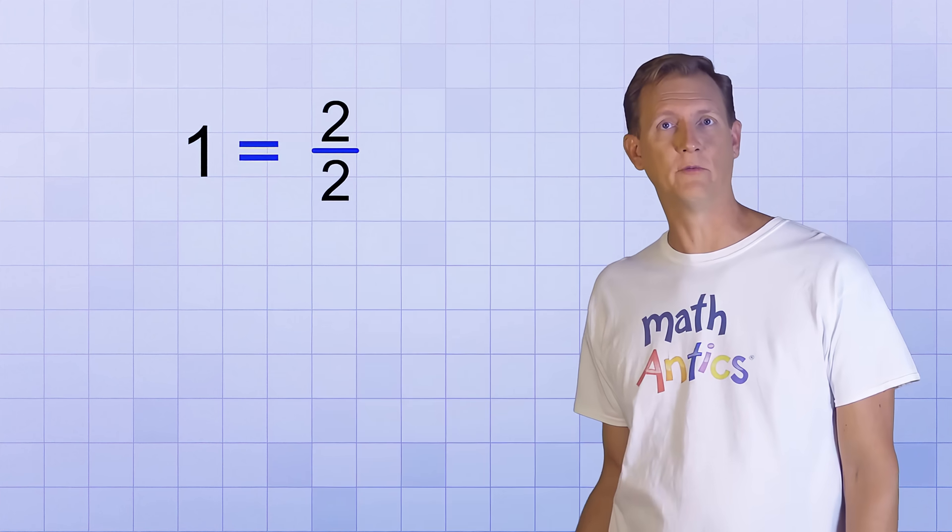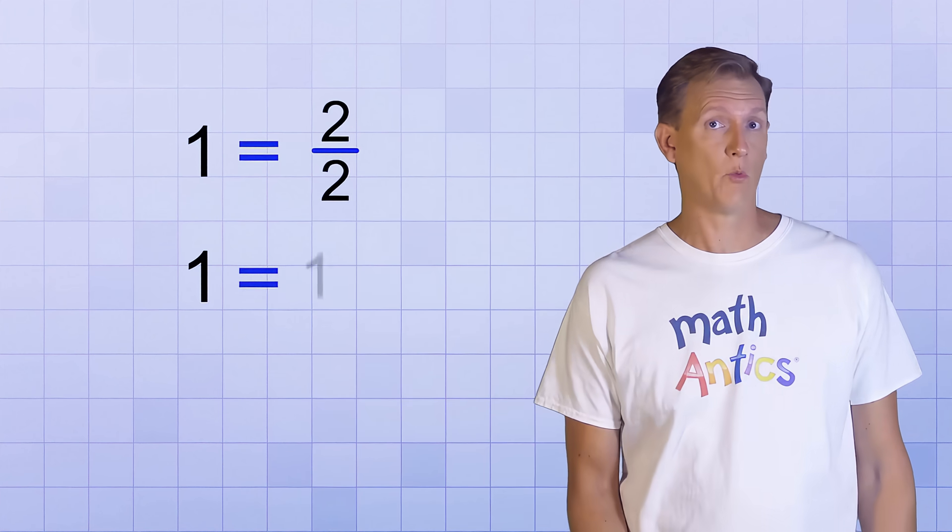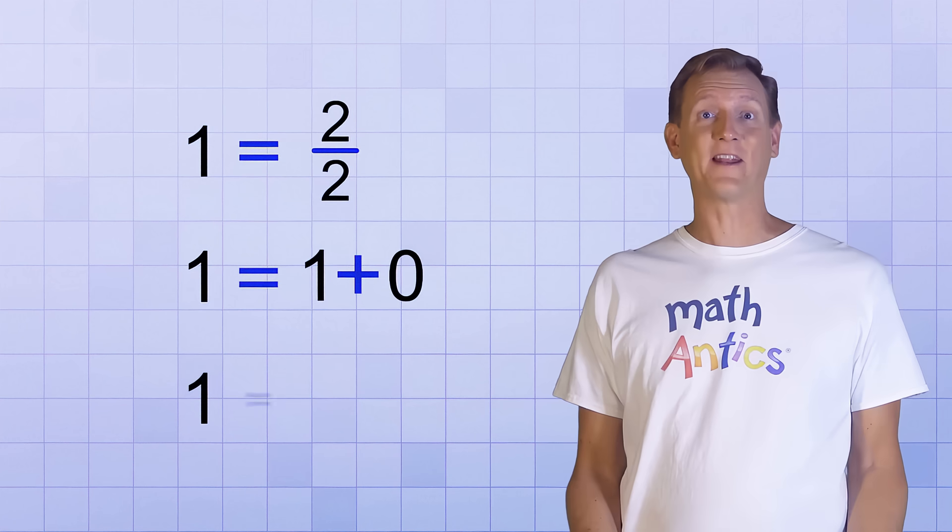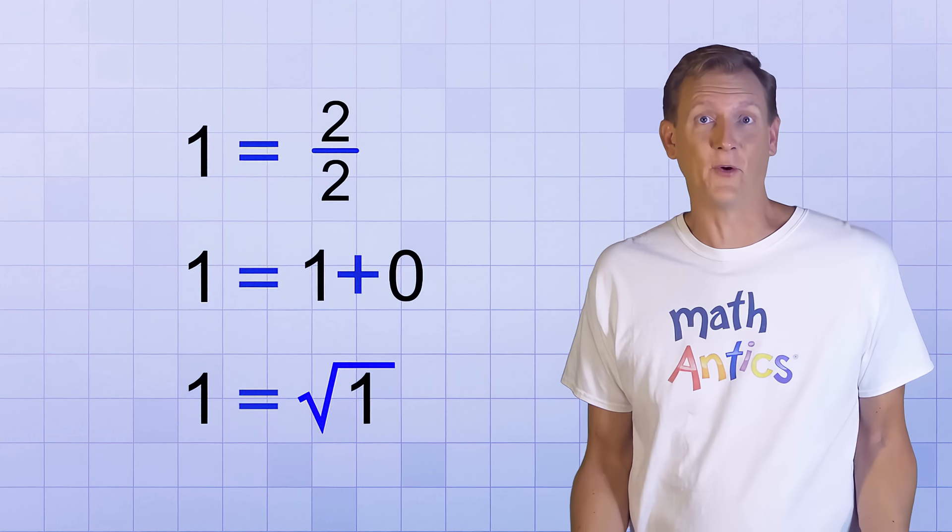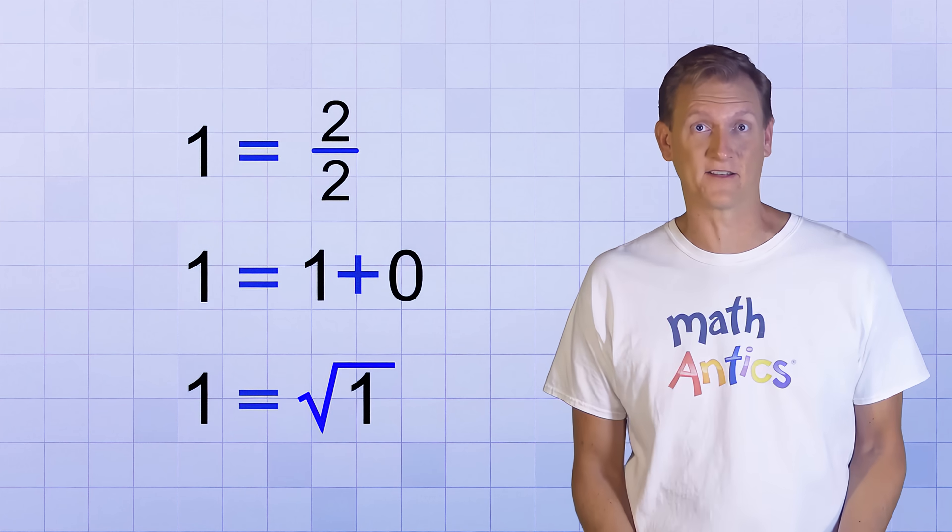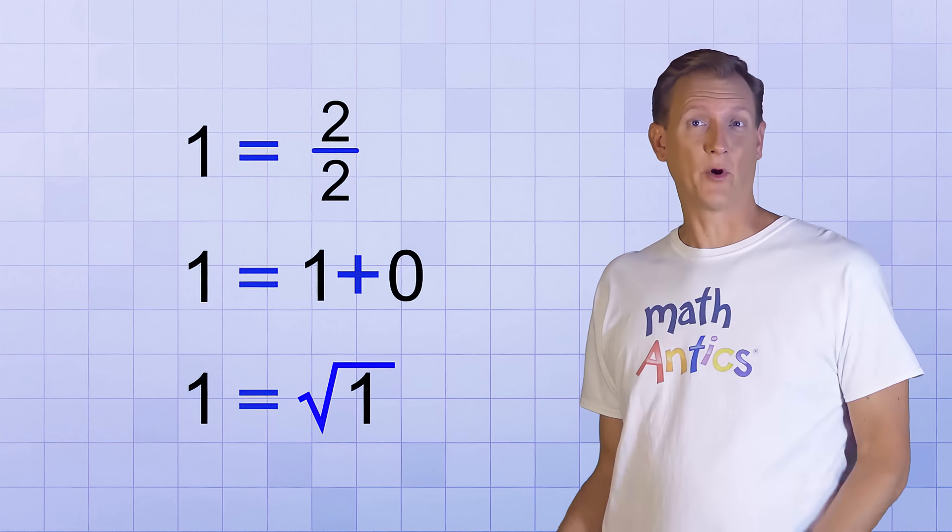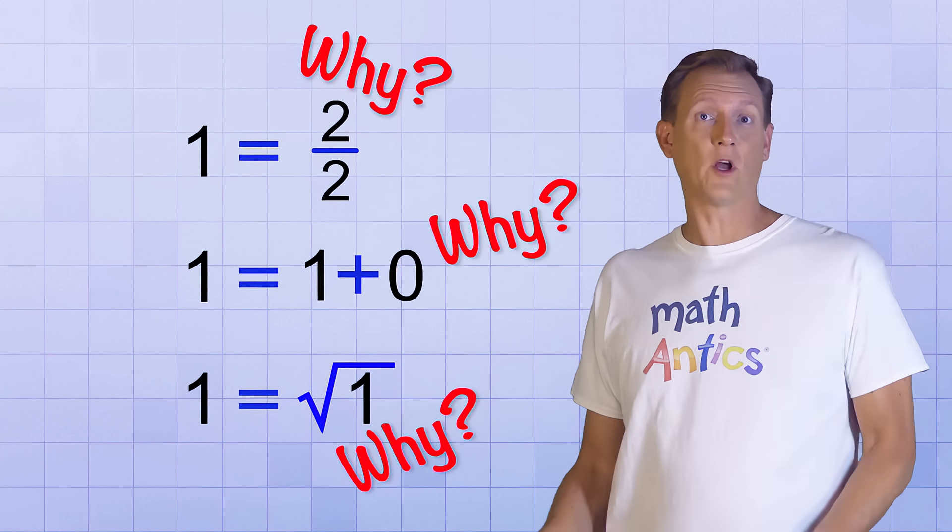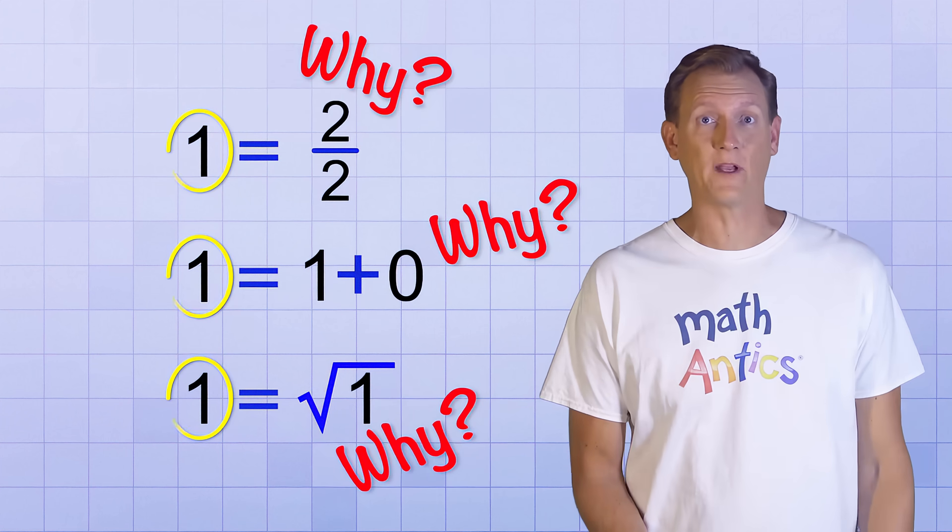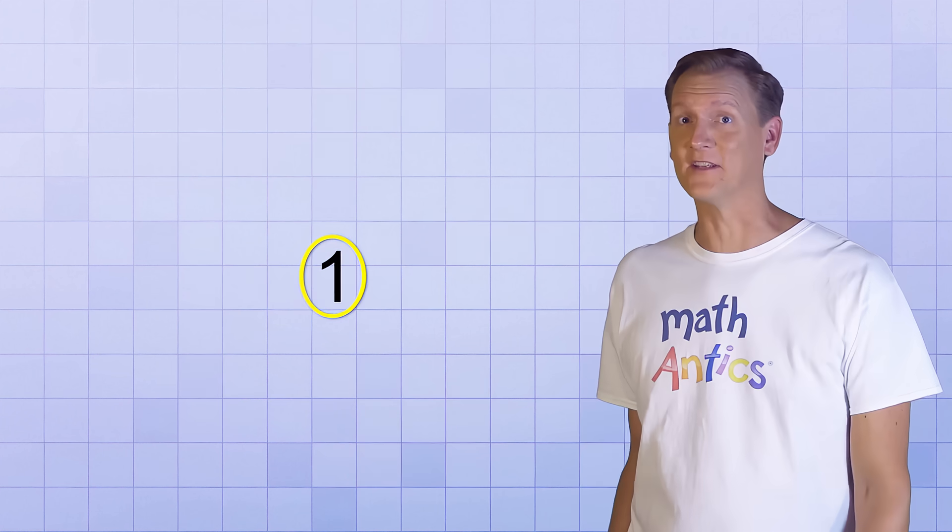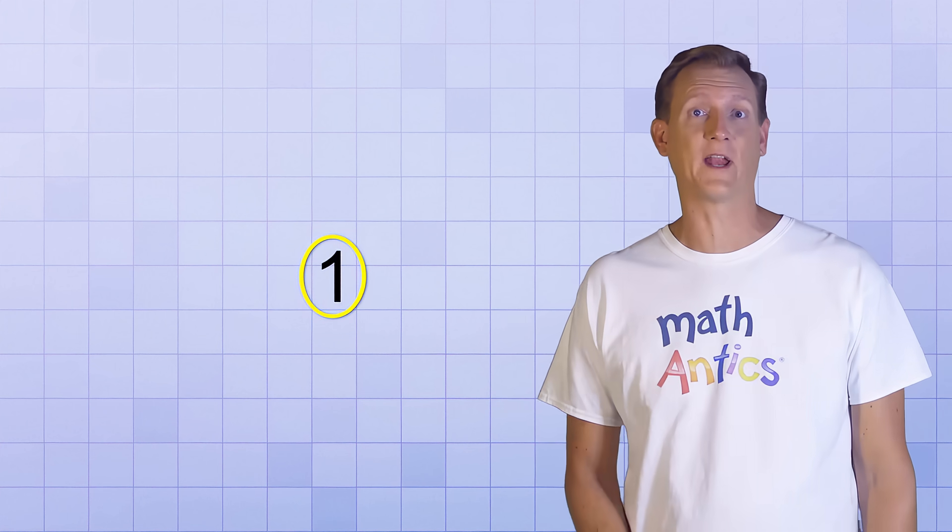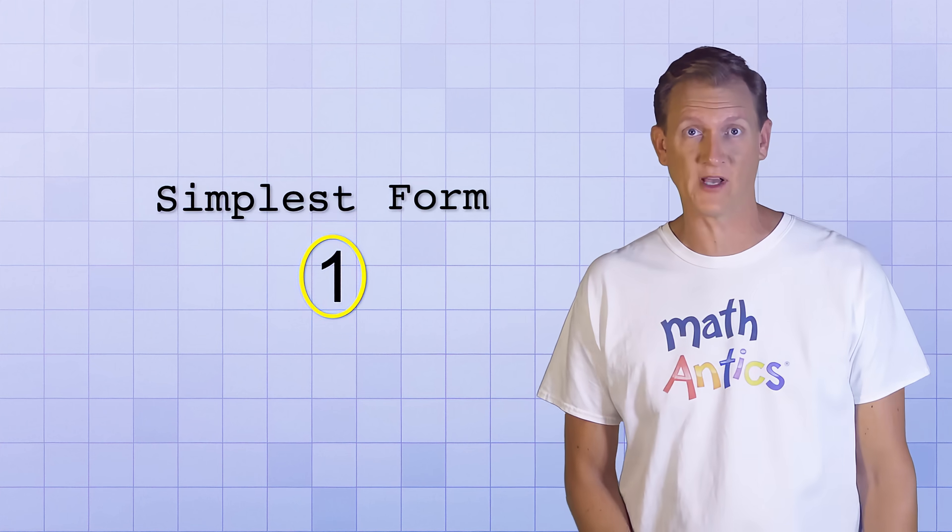Take the number 1, for example. You could write it as the fraction 2 over 2, or you could write it as the expression 1 plus 0. You could even write it as the square root of 1 if you wanted to. The possibilities are endless! But if it's the answer to your problem, why would you use any of these more complicated forms when you could just write 1? Isn't that a lot simpler? It sure is, and math teachers always like it when answers are written in the simplest form possible.